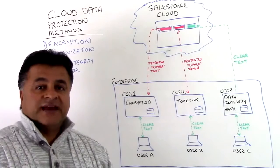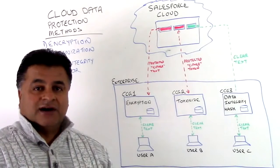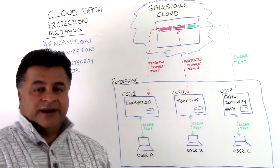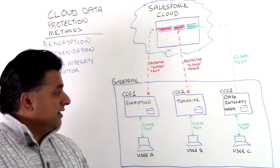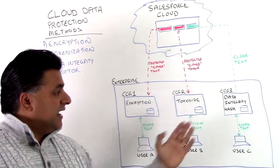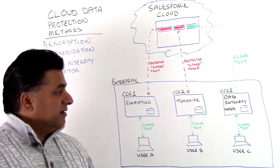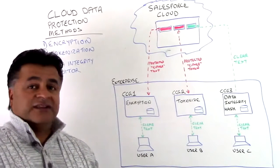So those are three examples of data protection methods: encryption, tokenization, and the data integrity monitor, which uses a hash.